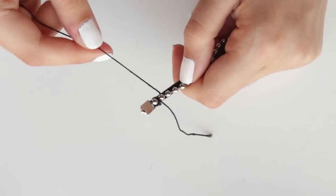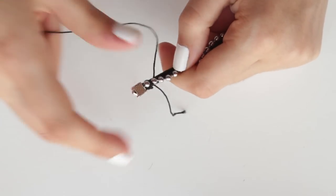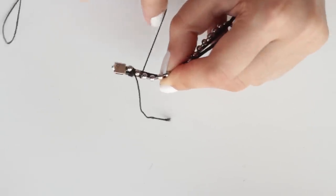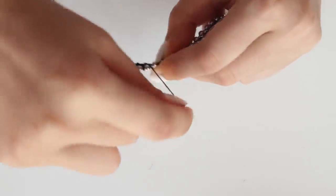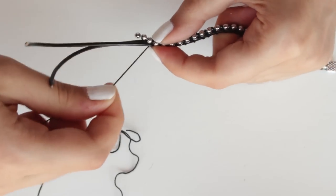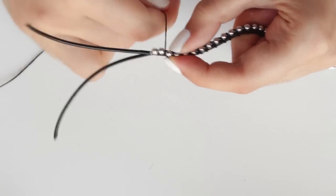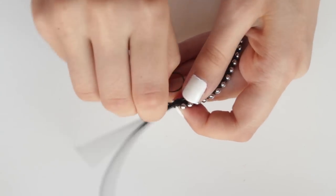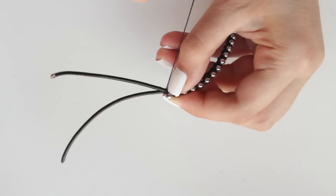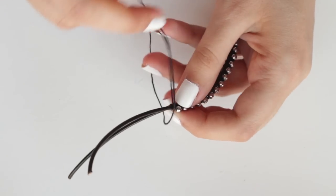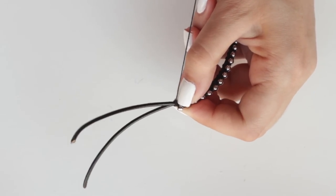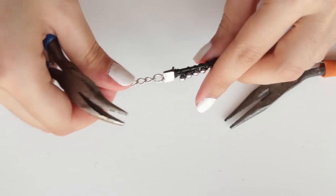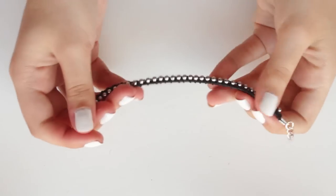Now, the only thing you need to do is wrap the thread around, making sure the chain sits in that crack between the cords. Once you reach the end, tie the thread around. Cut the excess thread and leather, attach the crimp ends and closure pieces and it's done!